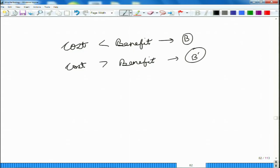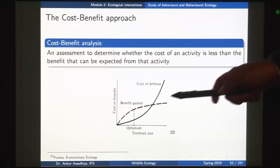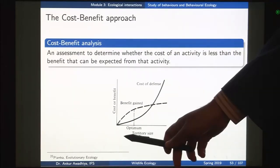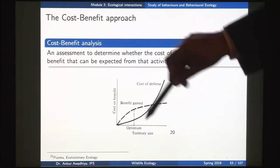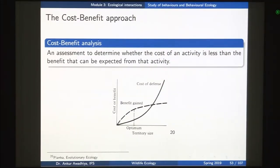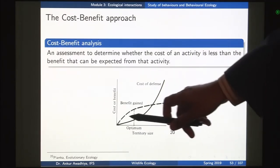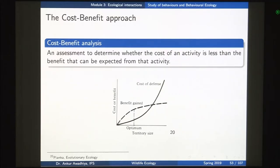In this context, a cost-benefit curve becomes important. Here we are trying to understand what is the territory size that will be used by an organism by putting territory size on the x-axis and the cost or benefit on the y-axis as the territory size changes.